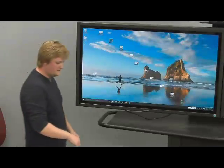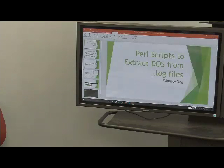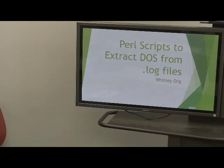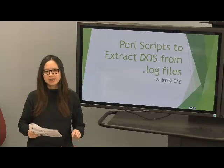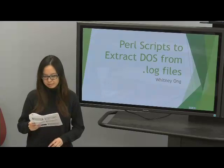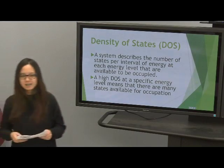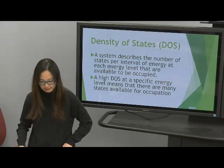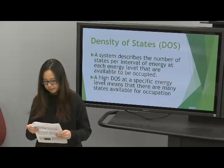The next presenter is Whitney, who will explain how to visualize and represent many orbitals at once using density of states. The density of states describes the number of states per interval of energy at each energy level that are available to be occupied by electrons. A high density of states at a specific energy level means more states are available for electron occupation.